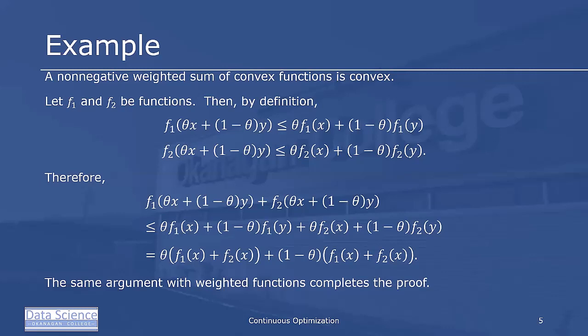Now if f₁ and f₂ are convex functions, then f₁(θx + (1-θ)y) ≤ θf₁(x) + (1-θ)f₁(y) and similarly for f₂.